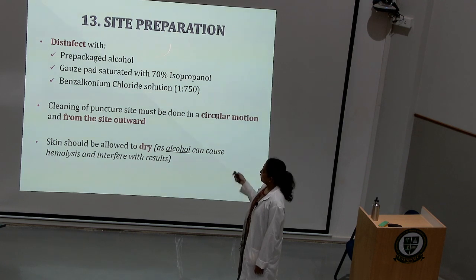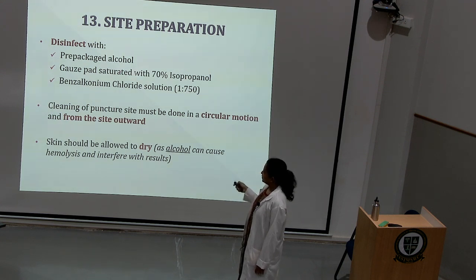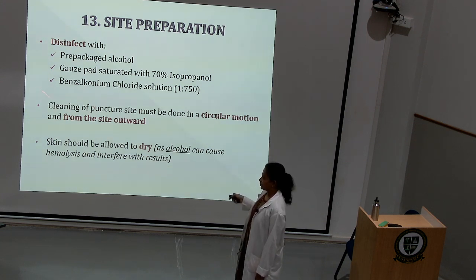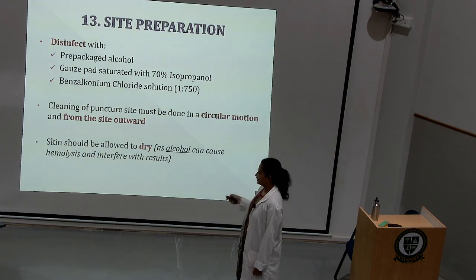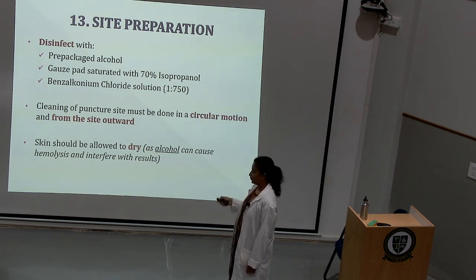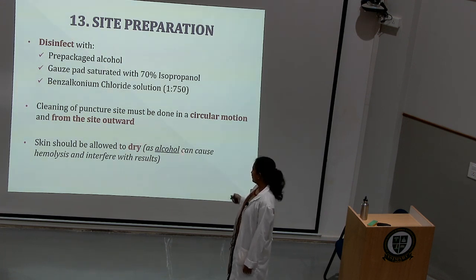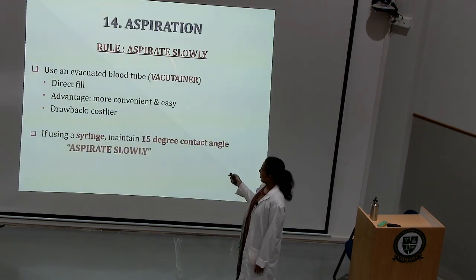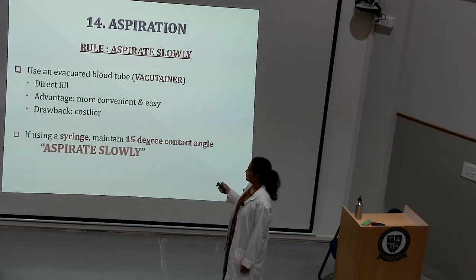You have to use a tourniquet to cause venous occlusion and distend the veins. Place it nearly 4 to 6 inches above the intended puncture site and do not leave it in place for more than 1 minute, as it increases the risk of hemolysis by nearly 20%. Remove or loosen the tourniquet once the blood starts flowing into the tube. Alternatively, a BP cuff with pressure no more than 60 mmHg can be used. Hemolysis is known to raise the concentration of potassium and LFT parameters, while hemoconcentration causes increased serum protein, potassium, and lactic acid. Avoid pumping and tapping of the hand while collecting.